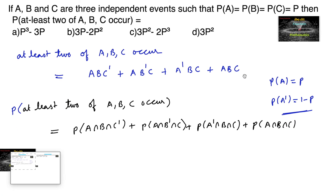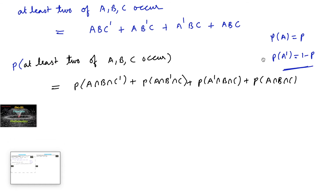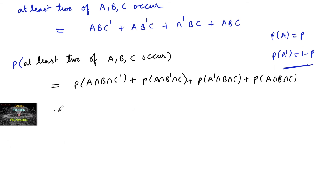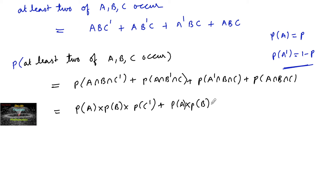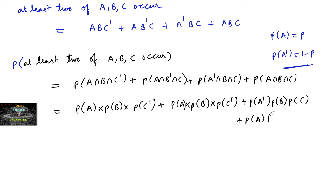Since A, B, C are independent, their complements are also independent. So we can write this as P(A)·P(B)·P(C') + P(A)·P(B')·P(C) + P(A')·P(B)·P(C) + P(A)·P(B)·P(C).